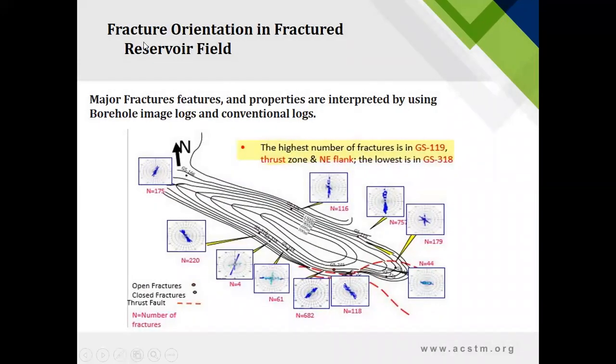So the first fracture analysis result is fracture orientation, and the second is fracture density. Major fracture features and properties are interpreted by using borehole image logs and conventional logs. As you see here, the changing of fracture orientation.